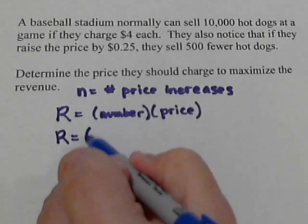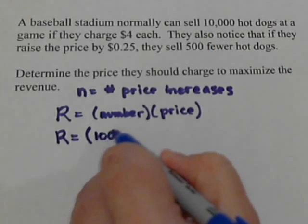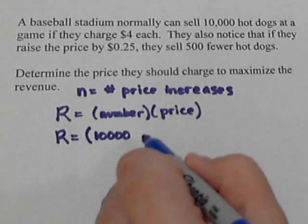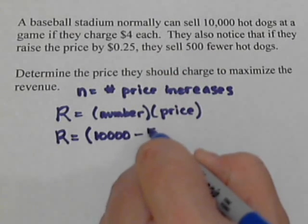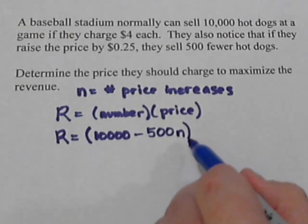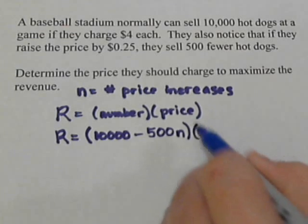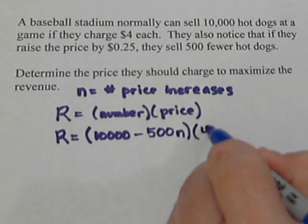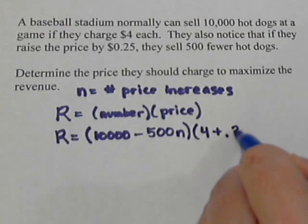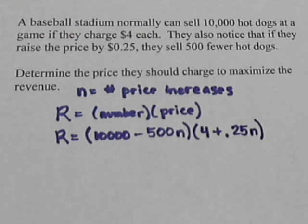So we have a couple of formulas here. The number of hot dogs starts at 10,000, and then every time we raise the price, we lose 500. So it would be minus 500 times the number of times we raise the price. And then the price starts out at $4, but we're increasing it by 25 cents each time, so we have an N there as well.